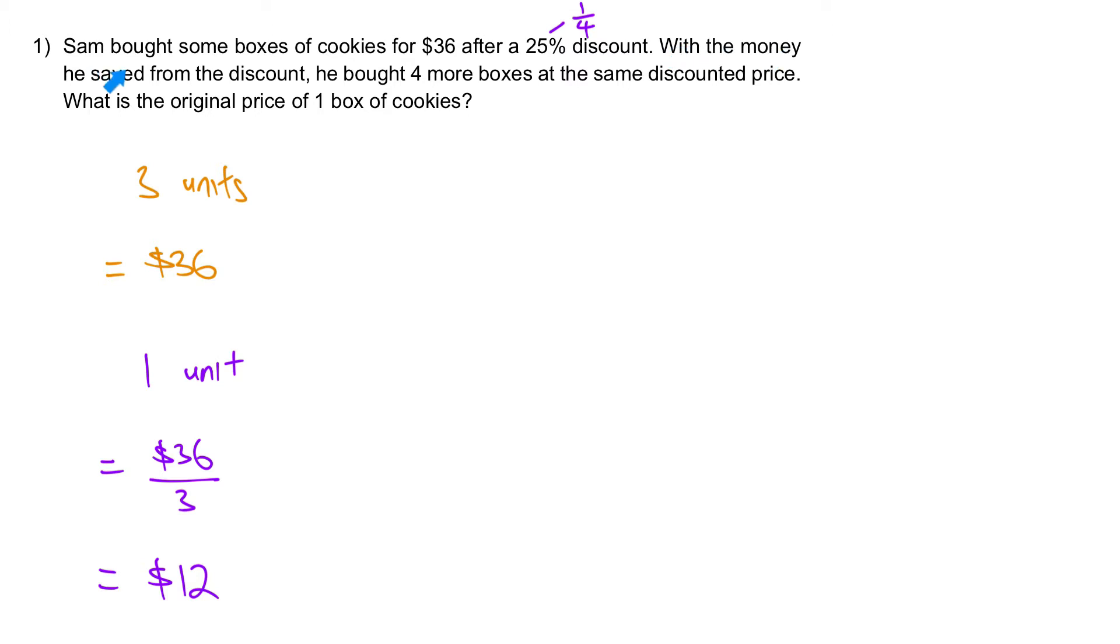With the money he saved, which is with the $12 from the discount, he can actually buy 4 more boxes at the same discounted price. Given that $12 buys you 4 more boxes, we can discover the discounted price. The discounted price of 1 box of cookies is $12 divided by 4, which equals $3.